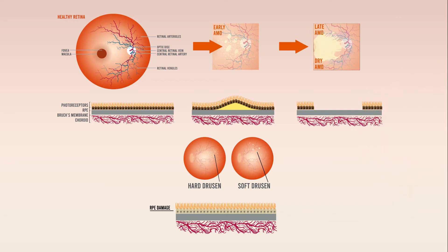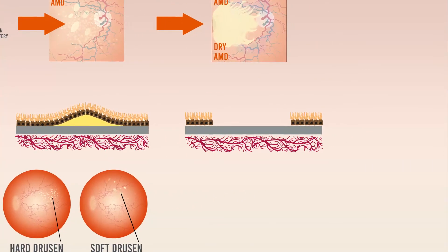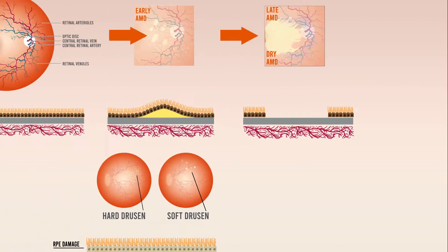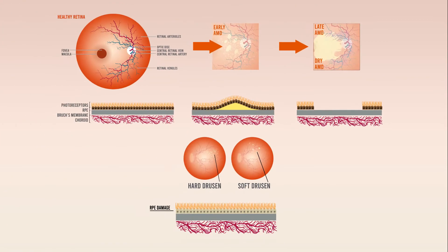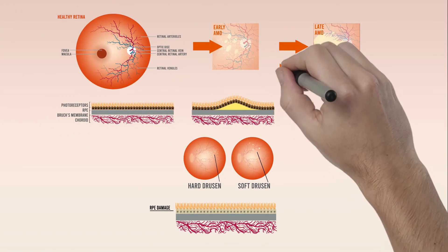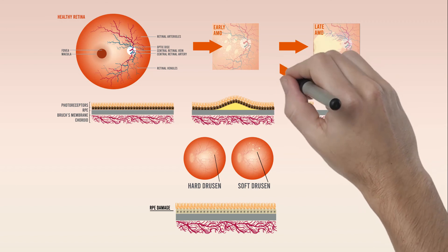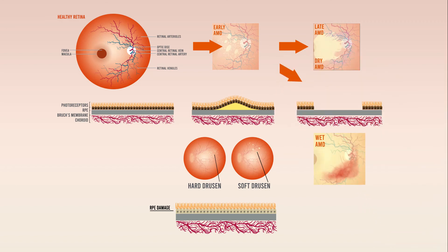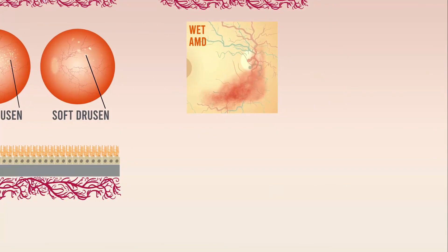Often these regions begin outside the fovea, so patients with geographic atrophy can maintain their vision until later in the disease process. Over the course of several years, the atrophic regions enlarge and coalesce, ultimately involving the fovea. This results in the loss of central vision. The other form of advanced AMD, wet AMD, is characterized by choroidal neovascularization.